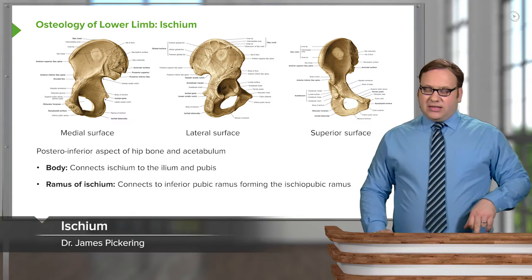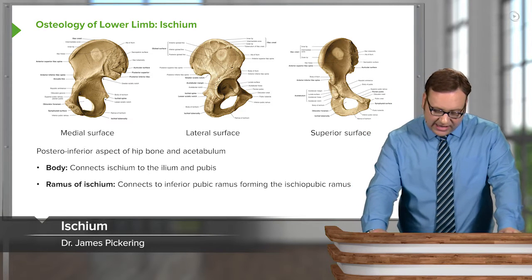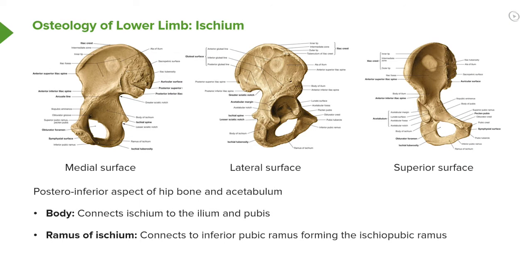Now let's turn to the ischium. The ischium is most posteriorly located — it's the posteroinferior aspect of the hip bone and also the acetabulum. Here on this lateral surface where we can see the acetabulum, if the ilium was superior from this line here, then the ischium is coming down into this region. So the ischium is everything below this line we can see here.